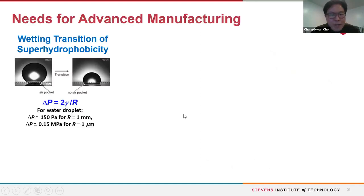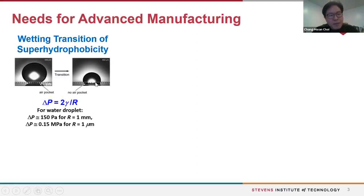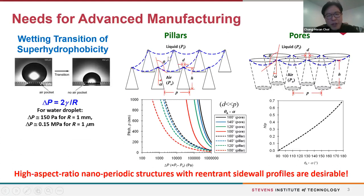Why do we care about manufacturing? In many applications, to avoid wetting transition — in the case of super-hydrophobic surfaces we want to use the trapped air layer for lubrication — but the air layer can easily be diffused off or pushed away by pressure. For example, if a water droplet evaporates, it becomes smaller, internal pressure increases, and we lose air. If you calculate the force balance between pressure and surface tension, you realize structures should be nano-period, with spacing of some microns and ideally higher aspect-ratio structures. Tuning the side profile to a negative slope or mushroom shape helps sustain high pressure.